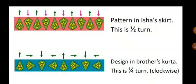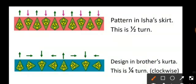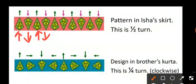Let us understand some patterns. In the first one, you can see it is up, then the second shape is down, then again up, then again down. The rule of the pattern is one up, one down — then it is repeated. This is a half turn.